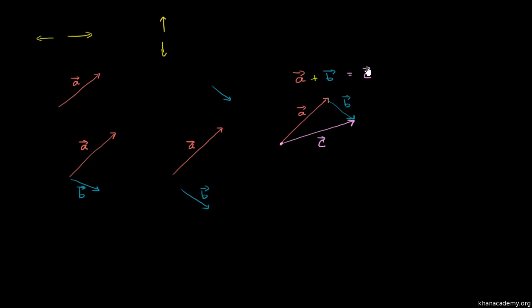And it should make sense if you think about it in terms of displacement vectors. Vector a shows that you're being displaced this much in this direction, and vector b shows that you're being displaced this much in this direction. So you have a displacement of a, and then a displacement of b. Your total displacement is the net amount you've been shifted — from start to finish — which is this vector c. That's why this would be the sum of those two vectors.